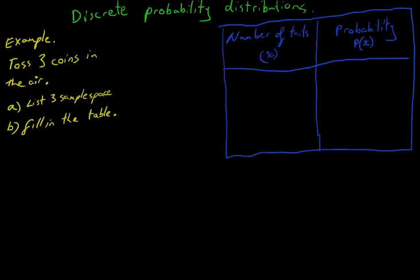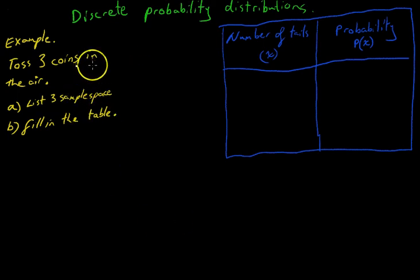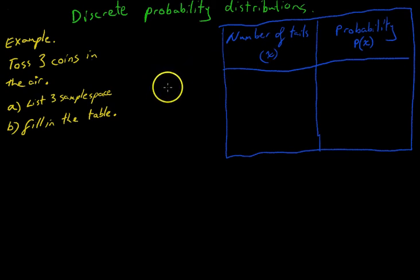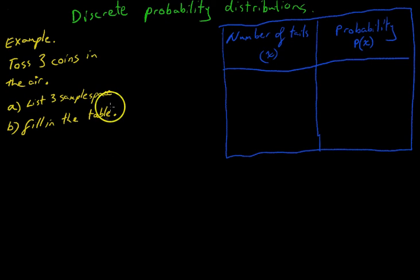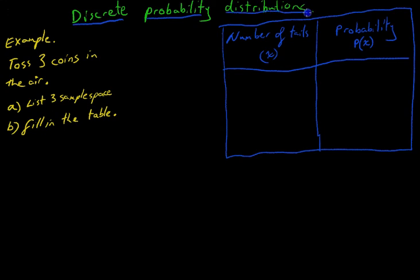Let's look at this quick example. It's not really a question in itself per se, but it's important to go through because there's something important you're going to learn by the end of this lesson about discrete probability distributions — we're going to learn a couple of properties. Now imagine that you tossed three coins in the air.